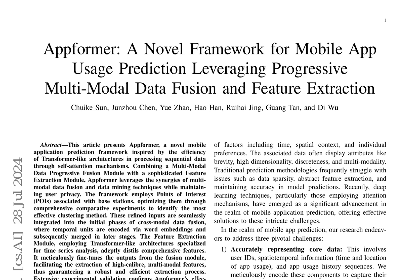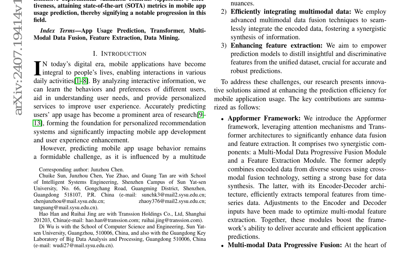The fusion process involves multiple stages, each aimed at extracting meaningful features from the combined datasets. This allows Appformer to consider both short-term and long-term dependencies in app usage patterns, as well as the impact of external factors such as time of day, location, and device type. The authors emphasize the need for a flexible and adaptive prediction model that can accommodate changing user preferences and behavior. By incorporating these factors, Appformer can provide more accurate predictions of future app usage patterns, with its progressive data fusion approach enabling it to capture complex relationships between different modalities.